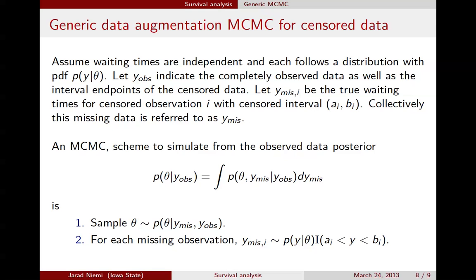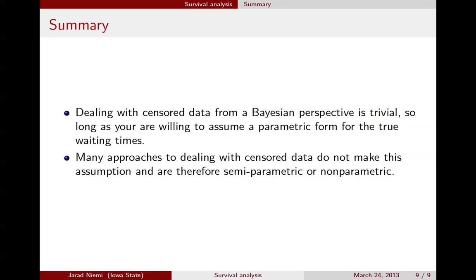This defines data augmentation: we augment the data with actual values for the missing observations, and the two steps together form a Gibbs sampler, or perhaps a Metropolis-within-Gibbs. Typically, sampling from the truncated distribution can be done using the inverse CDF method. In summary, dealing with censored data is very tractable from a Bayesian perspective as long as you're willing to assume a parametric form for the true waiting times. It doesn't matter what that form is, as long as you can sample from it. In contrast, many non-Bayesian approaches try to avoid this assumption, leading to semi-parametric and non-parametric methods, which are not covered here.